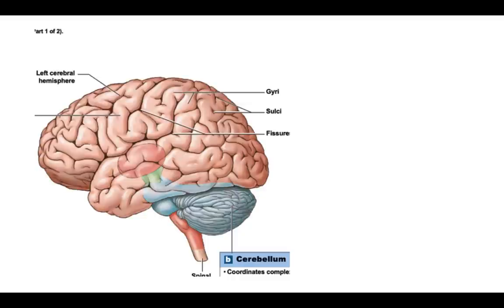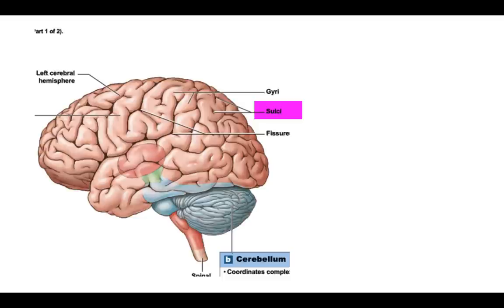First we're going to talk about the cerebrum, which is the largest portion of the brain. The cerebrum has two cerebral hemispheres divided by a longitudinal fissure. The outside of the cerebrum has the cerebral cortex, which is made up of gray matter. We can see elevations called gyri and the indentations separating them are called sulci. Sometimes we name these sulci — for instance, the central sulcus and the lateral sulcus.